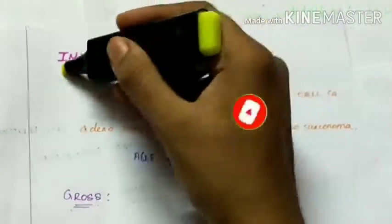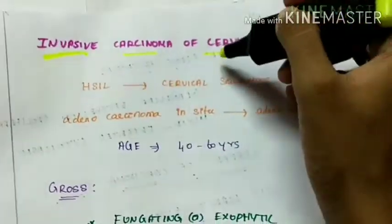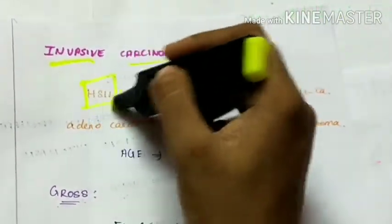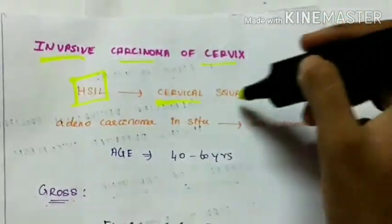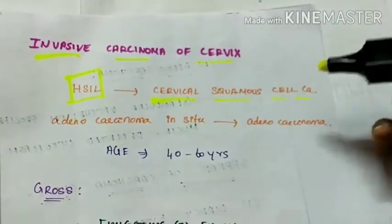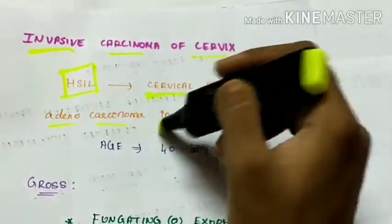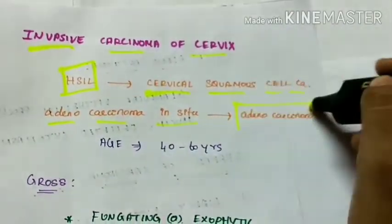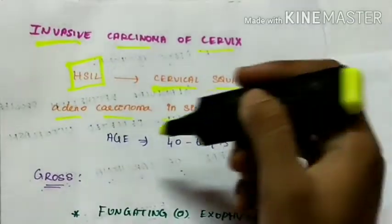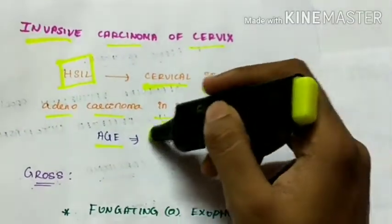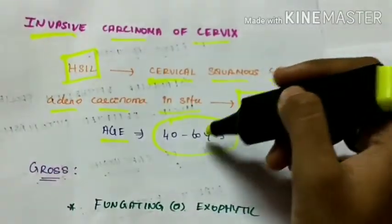Coming to the invasive carcinoma of cervix. The high grade SIL progresses to cervical squamous cell carcinoma. Whereas the adenocarcinoma in situ can progress to adenocarcinoma. The age it most commonly is seen in 40 to 60 years.